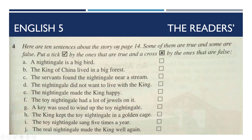Here are 10 sentences about the story on page 14. Some of them are true and some are false. Put a tick by the ones that are true and a cross by the ones that are false. کہہ رہے ہیں کہ page 14 سے یہ 10 sentences لیے گئے ہیں، ان میں سے کچھ درست ہیں اور کچھ غلط ہیں۔ جو درست ہیں ان کے سامنے tick لگائیں اور جو غلط ہیں ان کے سامنے cross لگائیں۔